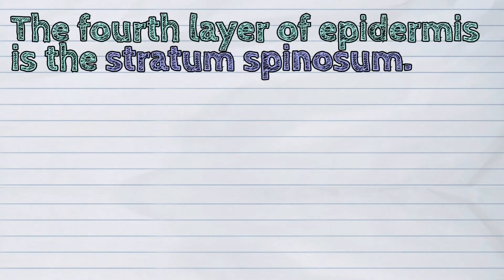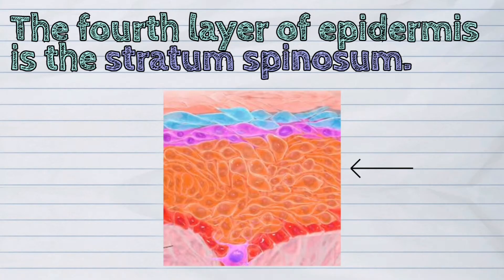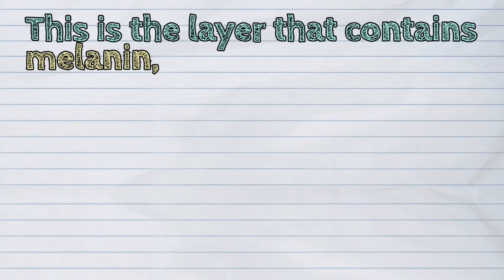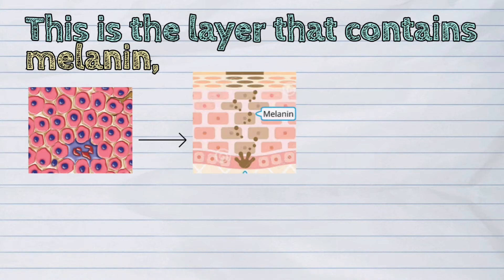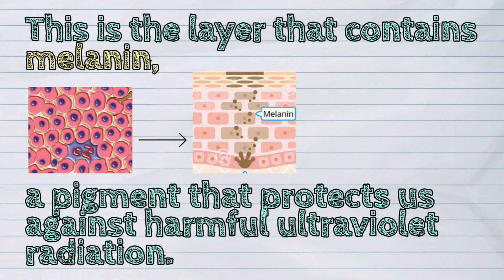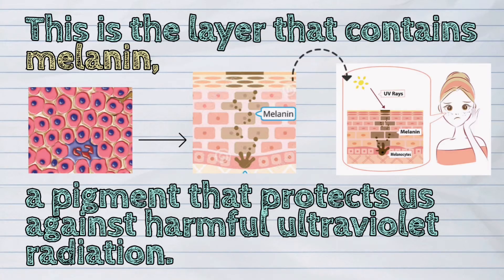The fourth layer of epidermis is the stratum spinosum. This is the layer that contains melanin, a pigment that protects us against harmful ultraviolet radiation.